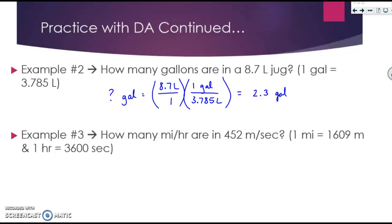The answer to this problem should be 2.3 gallons. You should have set it up so that 8.7 liters was first — that's our given — over one, since one is just a placeholder. You need to get rid of the unit you don't want, so liters needs to disappear. Since it's already in the numerator, in your conversion factor it needs to move to the denominator, so you can cancel out just the unit and be left with gallons. Since 8.7 is on top and 3.785 is underneath, you divide 8.7 by 3.785. Because our given number is only two significant figures, our answer should only be two sig figs as well.